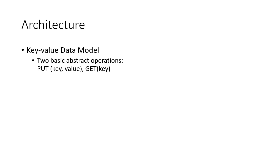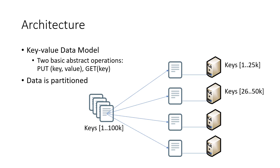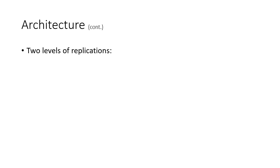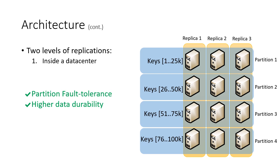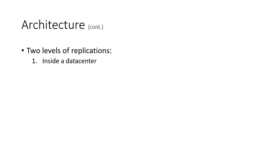We focus on the key-value data model. Two basic operations for a key-value store are put and get. Put writes a value for a key, and get reads the value of a key. We consider a partitioned data store where in each replica we have several partitions. Partitioning increases the scalability of the system, as we don't need to fit the whole data in a single machine. We have two levels of replication. The first level is inside the data center. Replicas inside the data center are mainly created to increase fault tolerance in case of partition failure. They also increase the durability of the data, as if one replica is lost, the data is still available in other replicas.